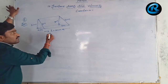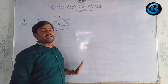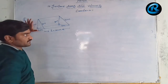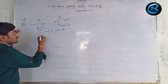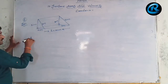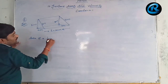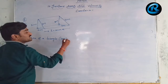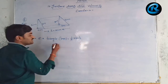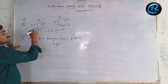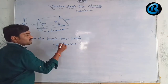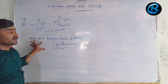Volume of a prism = area of the base × height. The base is a right-angle triangle, so area of triangle = ½ × base × height = ½ × 4 × 3 = 6 cm². The height of the prism is 10 cm.